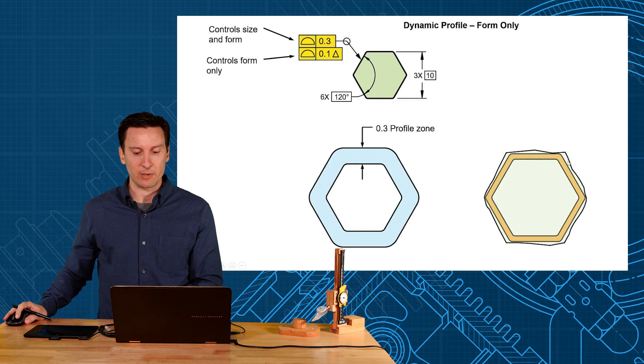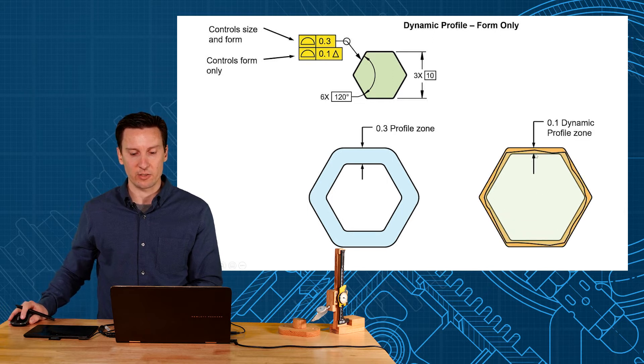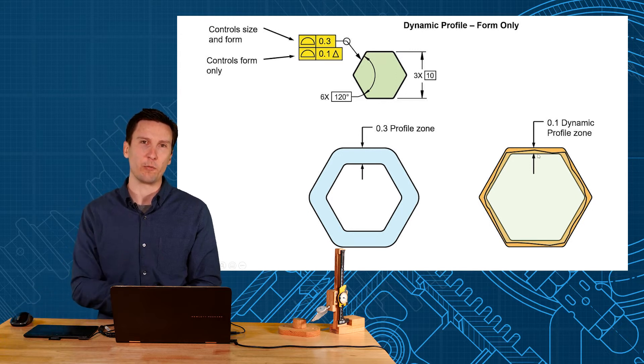So now if a shape came out like this and you said okay it's just a little bit too big, well this profile boundary for the 0.1 can expand and say yes as long as this distance between them is good then we do have a good profile.